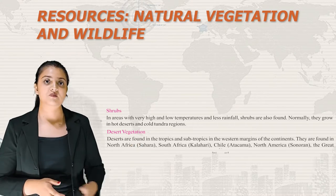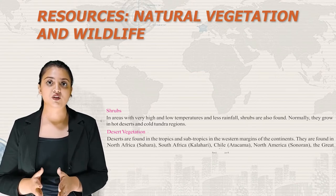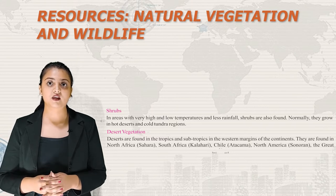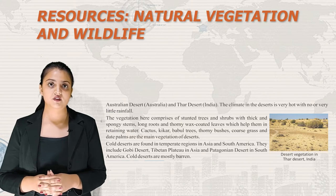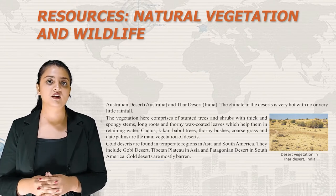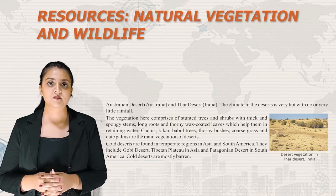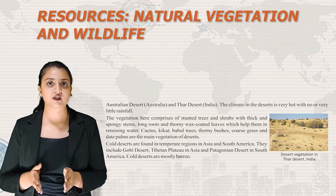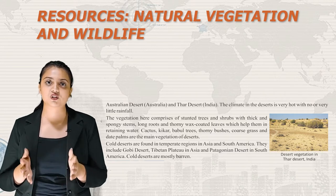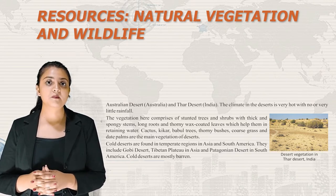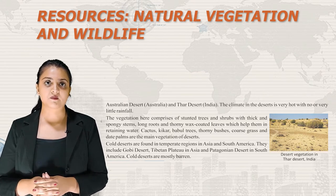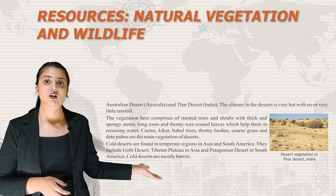Deserts are found in the tropics and subtropics on the western margins of continents, including the Sahara in North Africa, Kalahari in South Africa, Atacama in Chile, Sonoran in North America, the Great Australian Desert and the Thar Desert in India. The climate is very hot with little or no rainfall. Vegetation comprises stunted trees and shrubs with thick spongy stems, long roots and thorny waxy leaves to retain water. Main desert plants include cactus, thorny bushes, coarse grass and date palms. Cold deserts in temperate regions include the Gobi Desert, Tibetan Plateau and Patagonian Desert.